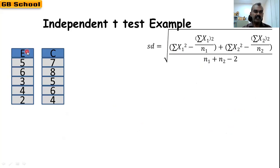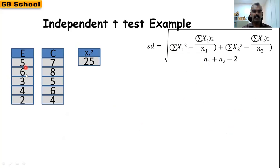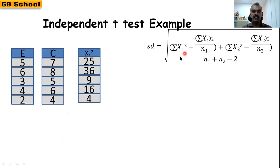We square each x₁ value: 5² = 25, 6² = 36, 3² = 9, 4² = 16, 2² = 4. The sum of x₁² is 25 + 36 + 9 + 16 + 4 = 90.